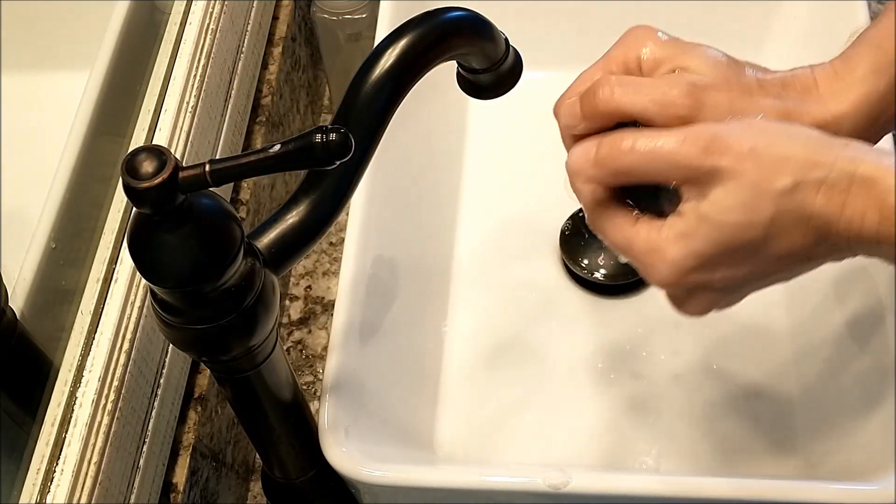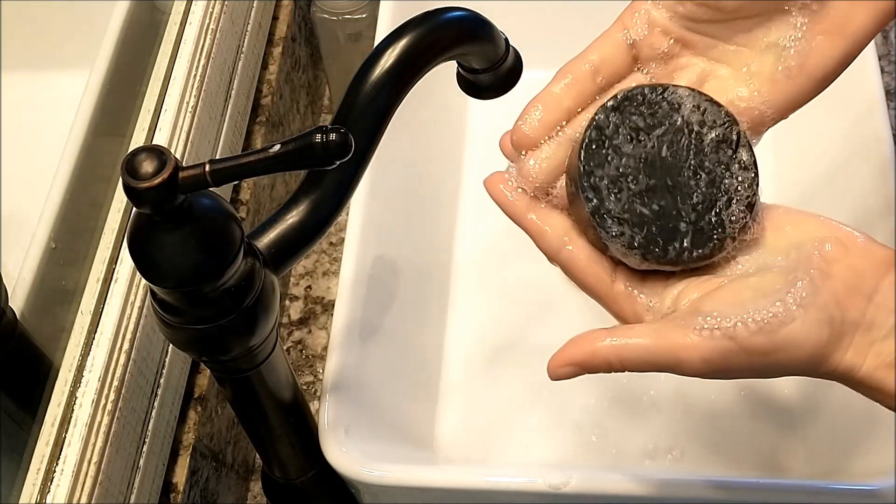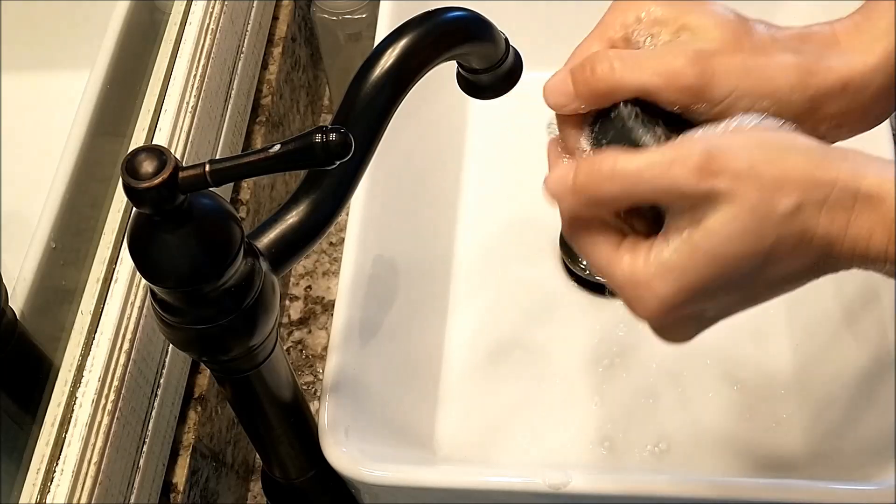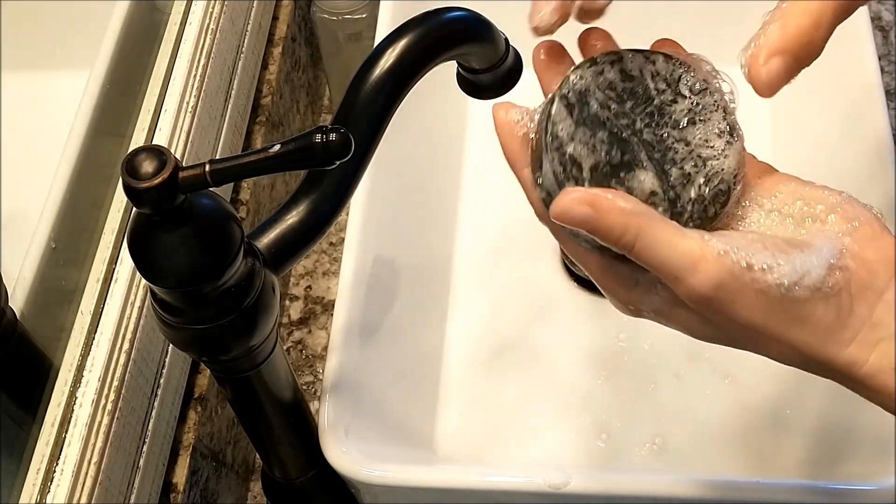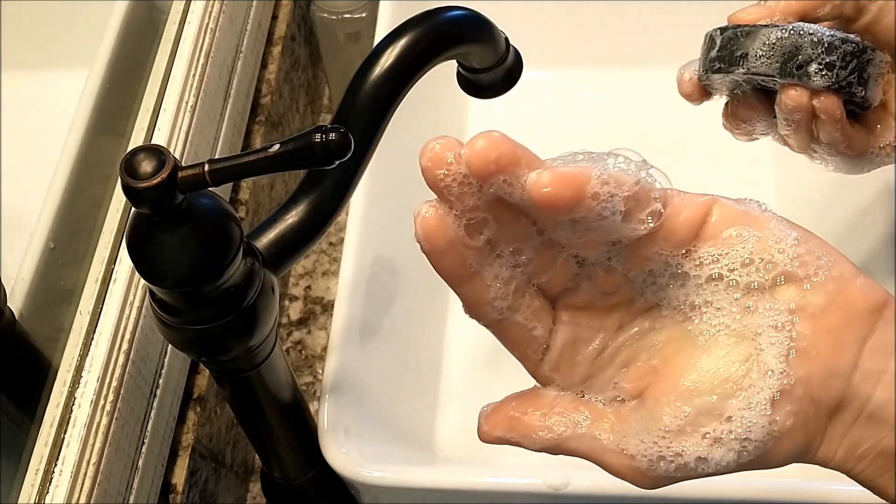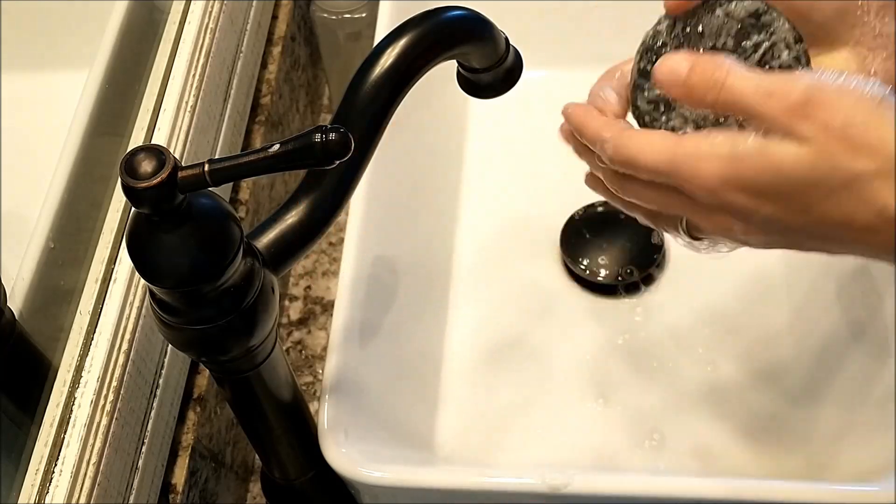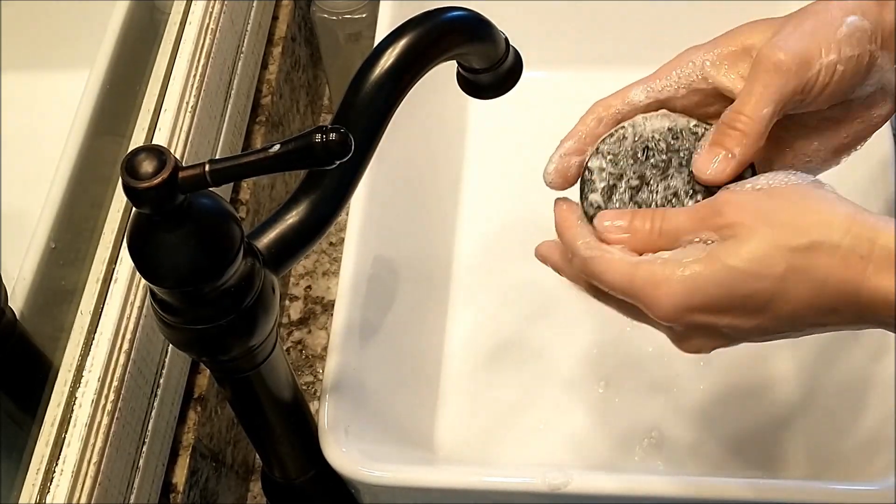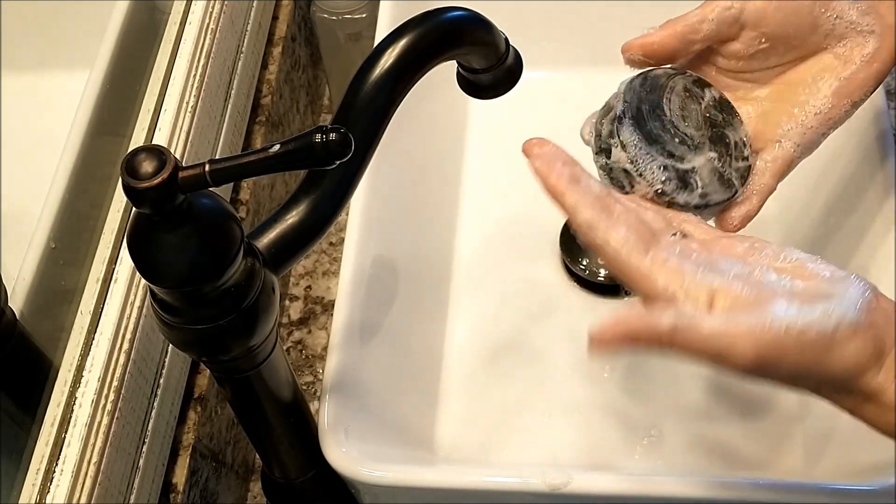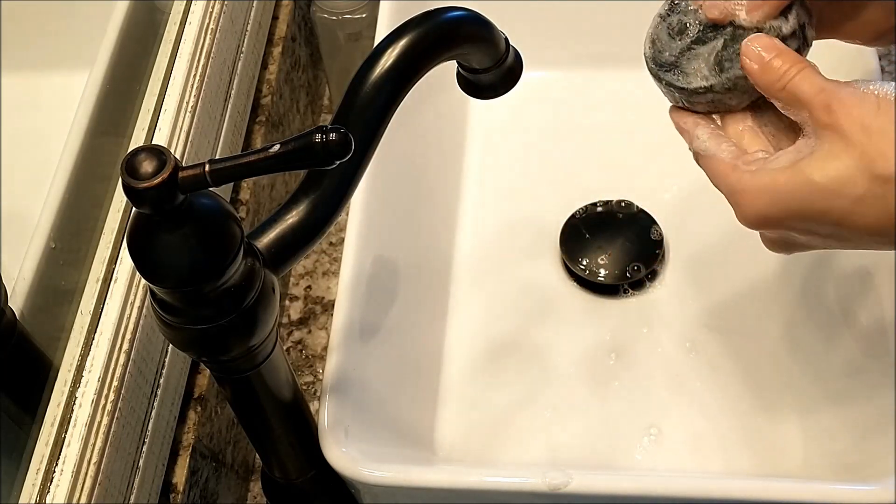This will give nice big bubbles, and the activated charcoal does turn the lather a little bit gray, but it doesn't stain anything. You've got some nice big bubbles in there. You can use this for body as well—nice lather there.